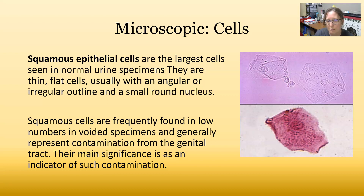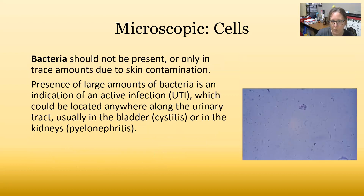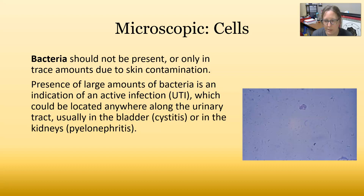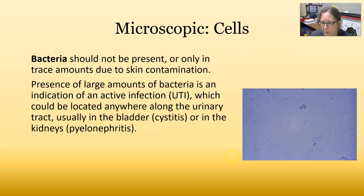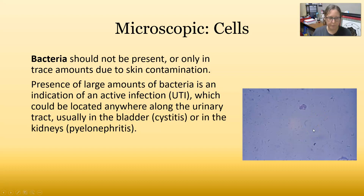Squamous cells are frequently found in low numbers in voided specimens and generally represent contamination from the genital tract. Lots of epithelial cells means a contaminated specimen. Bacteria should not be present, or only in trace amounts due to skin contamination. If you also see a lot of squamous epithelial cells with bacteria, that could just be contamination, but the presence of large amounts of bacteria is an indicator of an active urinary tract infection, located either in the bladder (cystitis) or in the kidneys (pyelonephritis).